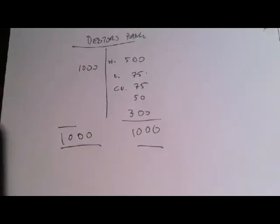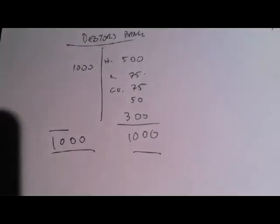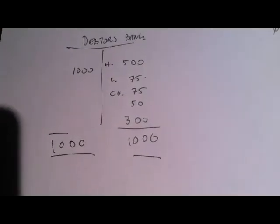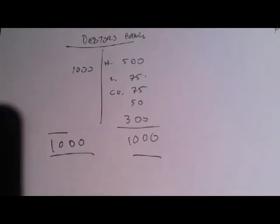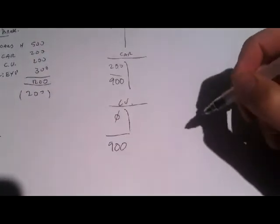So, what is effectively happening is that over here on the car, they would be getting $900 a year instead of the expected $2400. Credit union would be getting $900 a year instead of the expected $2400.